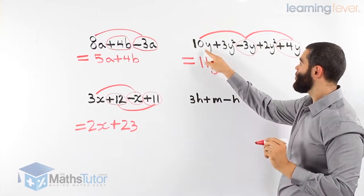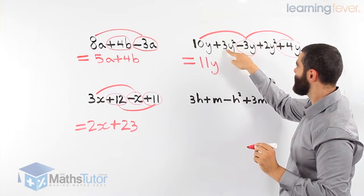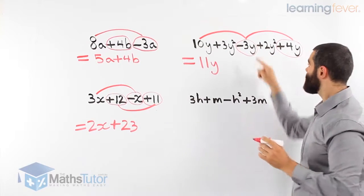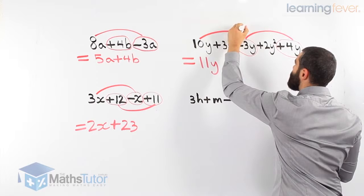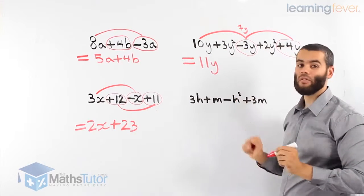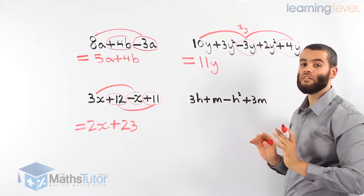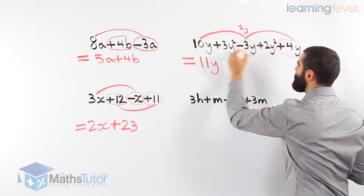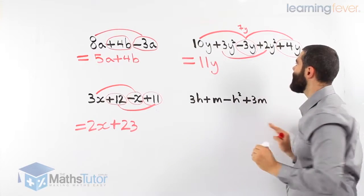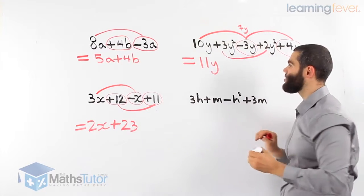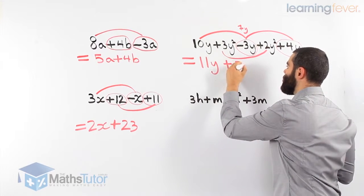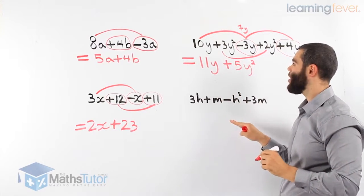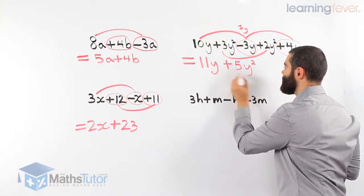Very important: 10y minus 3y — because that minus belongs to the 3y, and that plus belongs to the 3y squared. 10y minus 3y is 7y, and 7y plus 4y is 11y. So now the y's have finished; we can look for more like terms. Yes — 3y squared and 2y squared: 3y squared plus 2y squared is 5y squared. So our final answer is 11y plus 5y squared. We can't go any further, because these are not like terms.